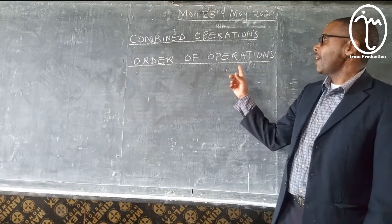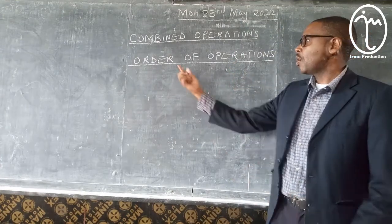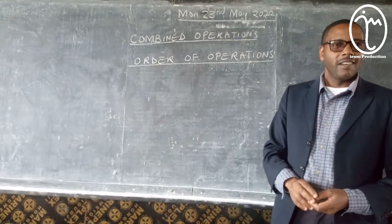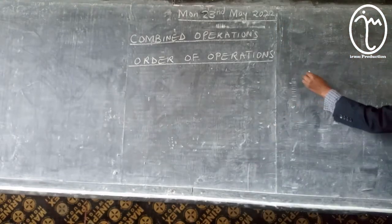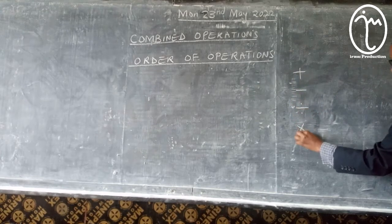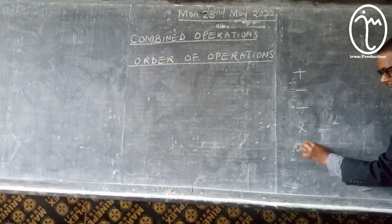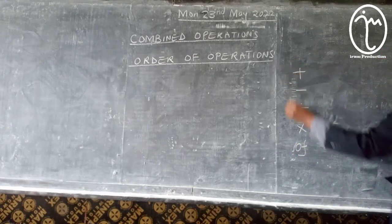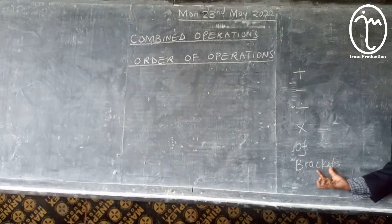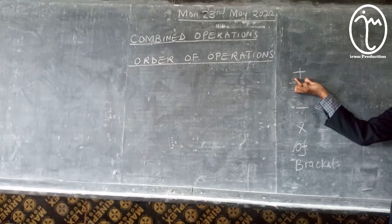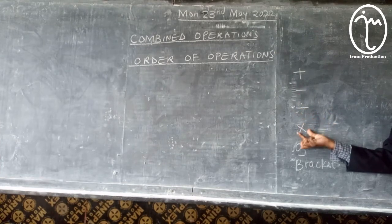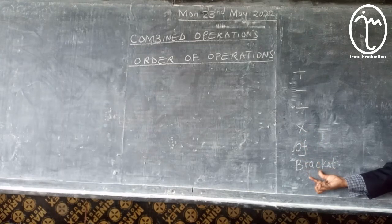So today we are learning about combined operations, also called order of operations. Can you say 'order of operations'? Order of operations. When I'm talking of operations, I'm talking of addition, subtraction, multiplication, and brackets. These are the operations we use in mathematics.